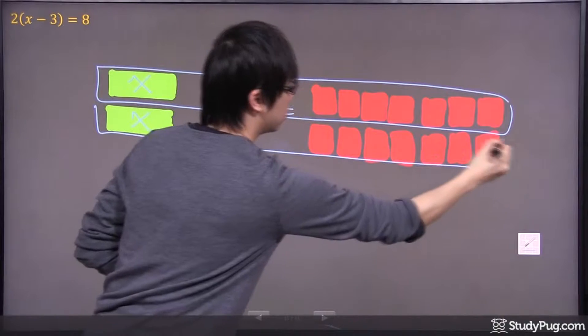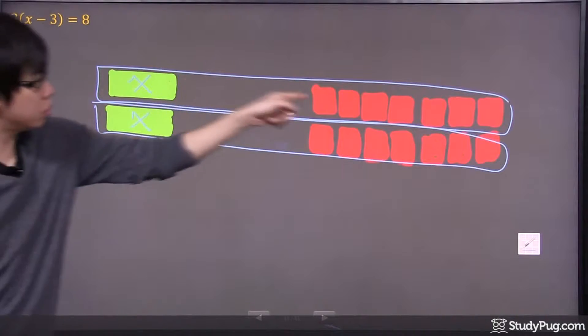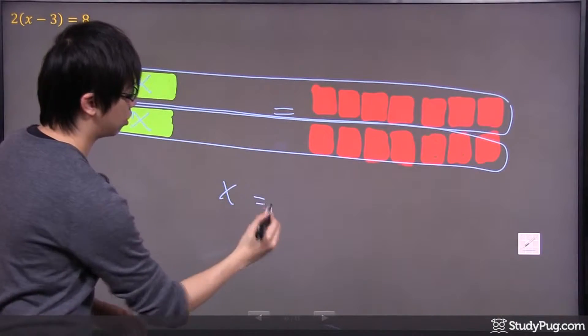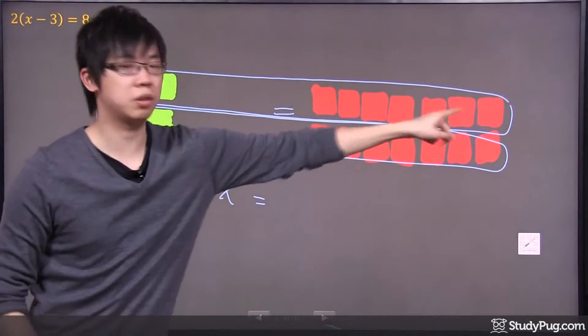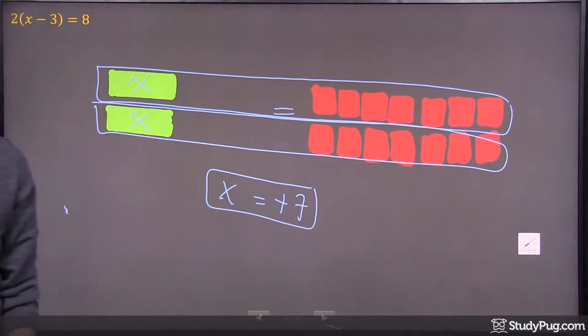So, that kind of tells you that in each set, see that x right there in the first one? That x equals to one, two, three, four, five, six, seven. It's equal to positive seven, and that's the answer for this question.